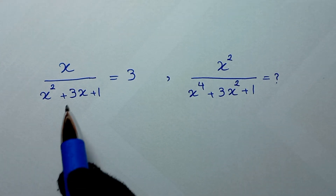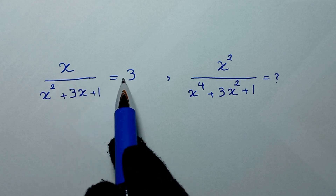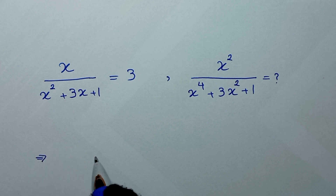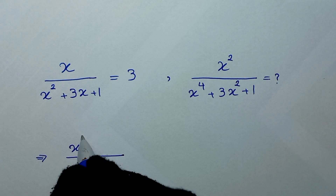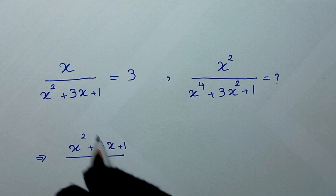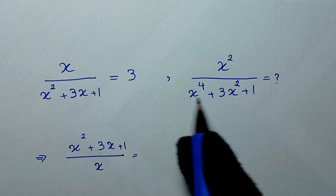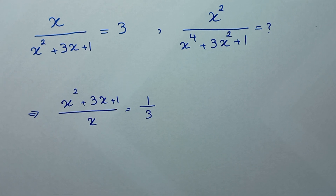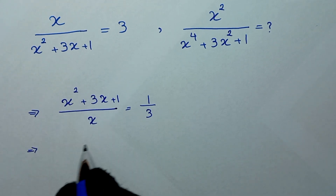In the first step, we reverse the numerator and denominator for both sides of this equation. So it will be x squared plus 3x plus 1 over x is equal to 1 over 3.